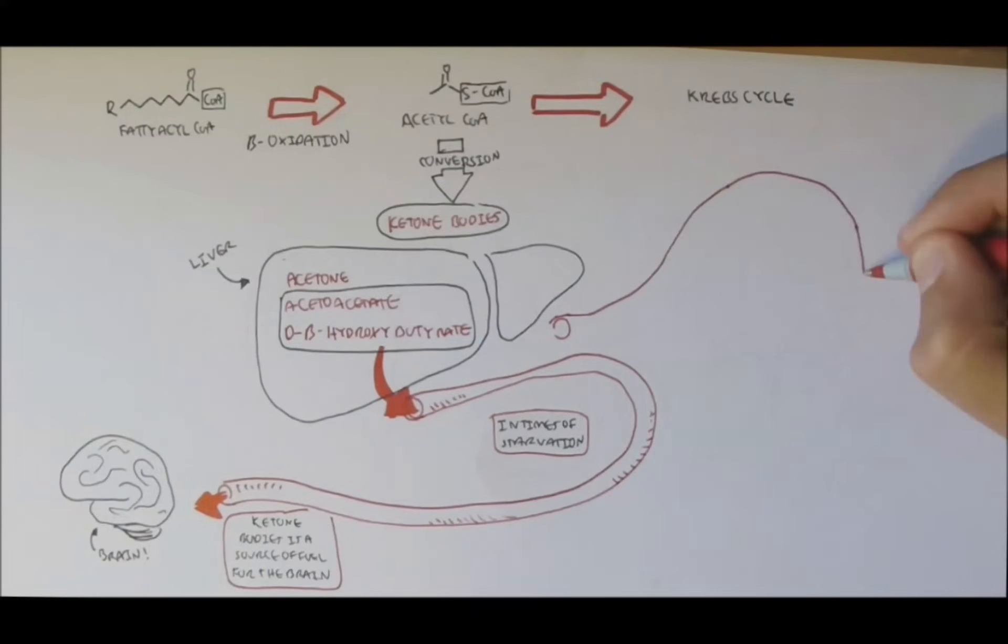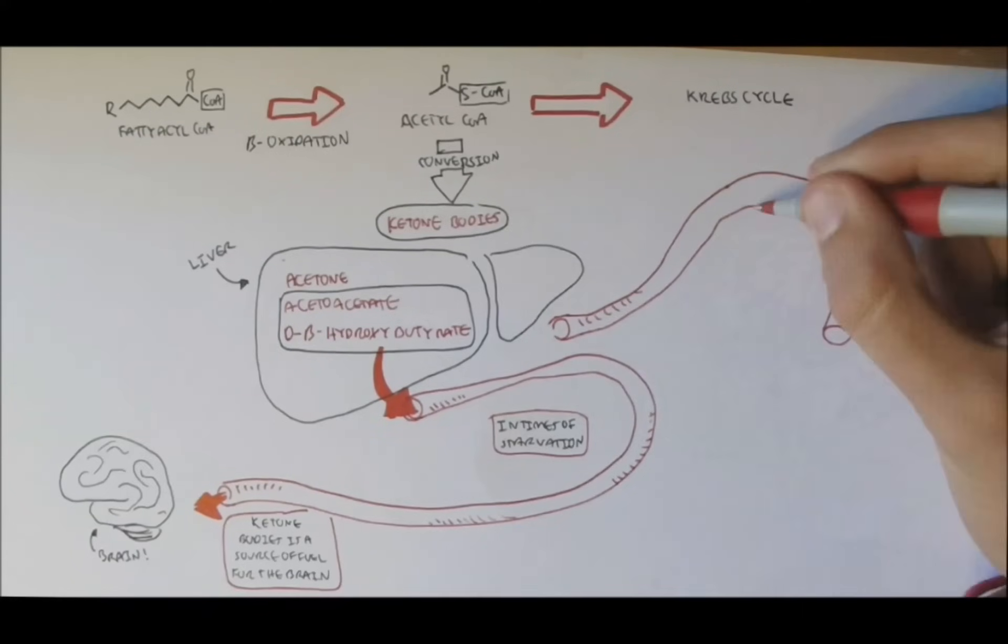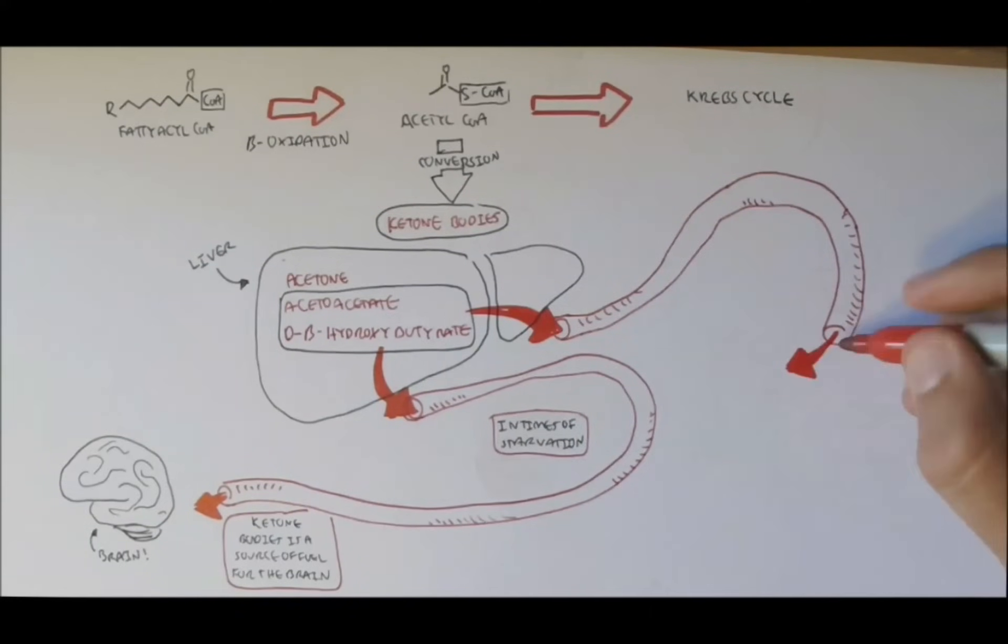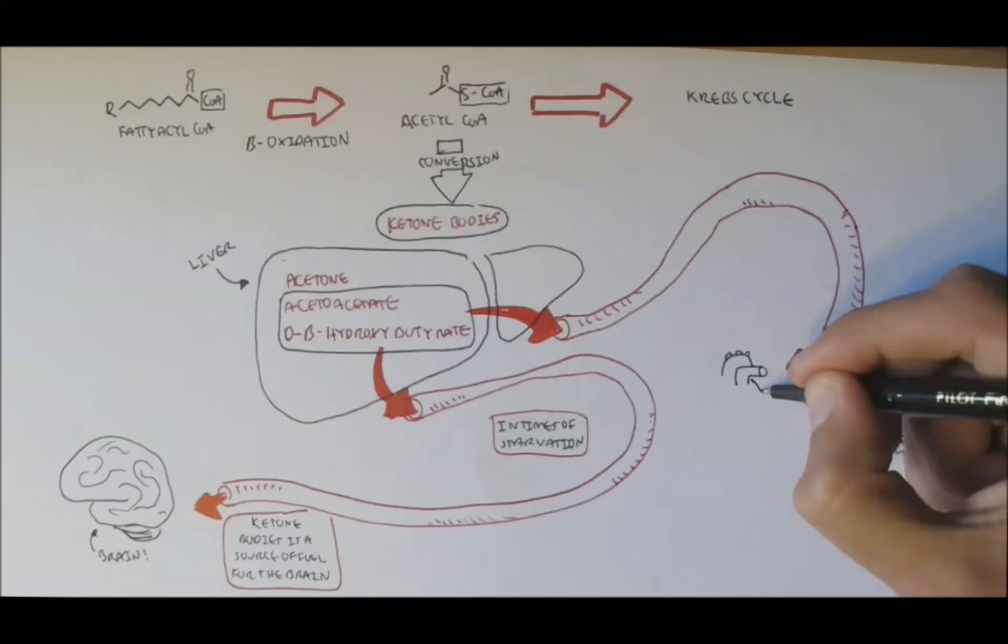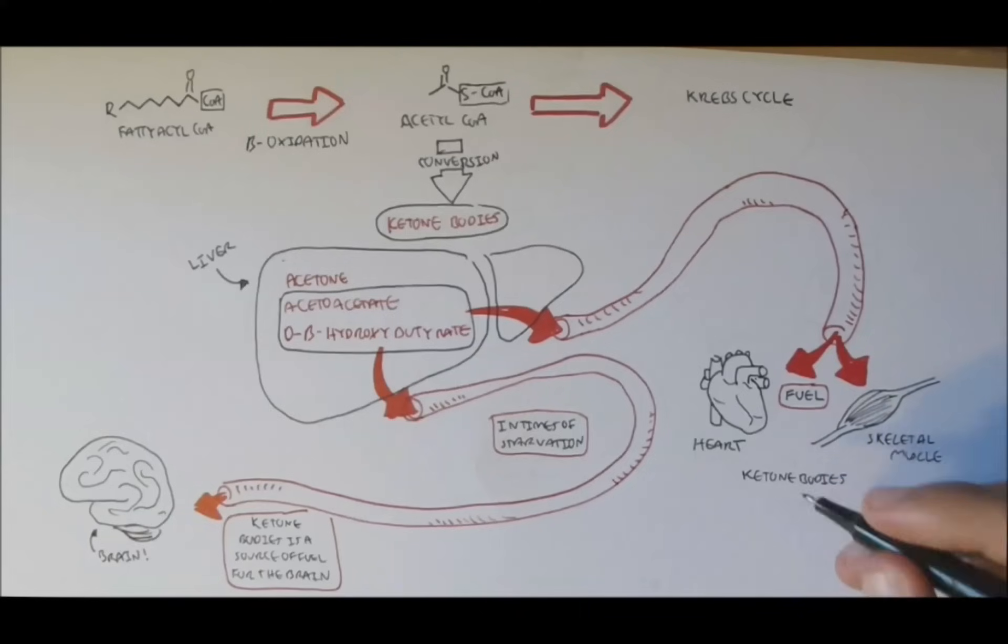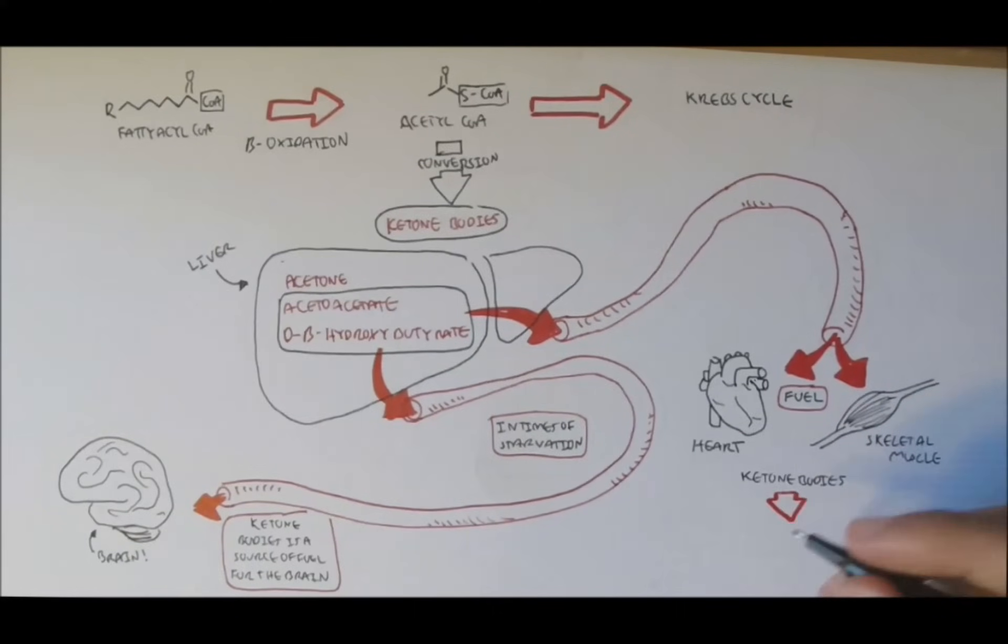Also, these ketone bodies can be transported to other organs, such as the skeletal muscle and the heart, to be used also as fuel. Because, once at these organs, the ketone bodies can be converted back to acetyl-CoA, which can then be converted to glucose as fuel.